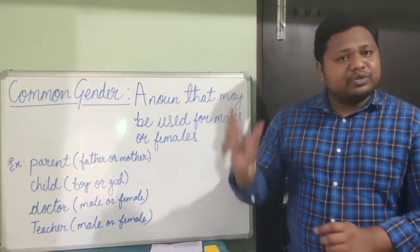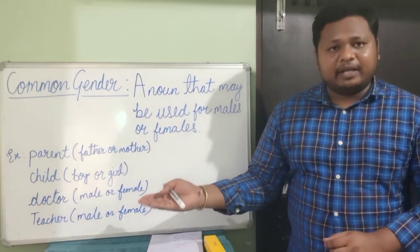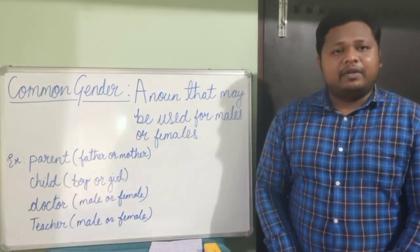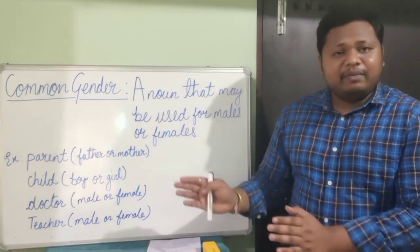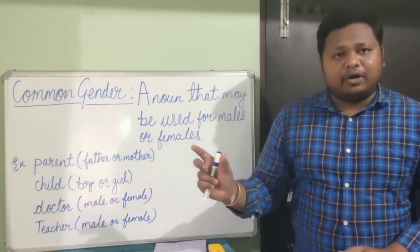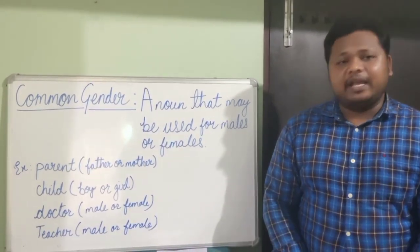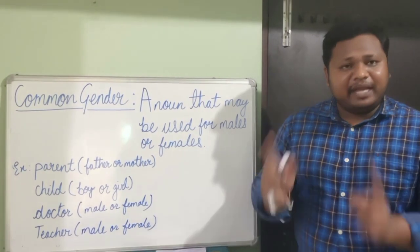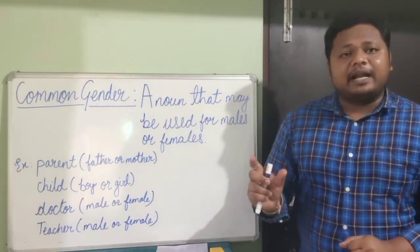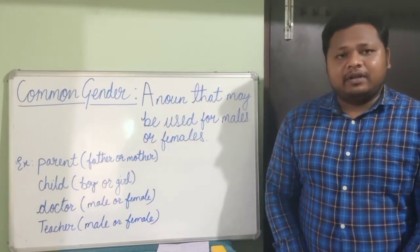We use the word 'child' for both a girl and a boy, so 'child' is a common gender. 'Doctor' — whether male or female — is called by the common name 'doctor', so it is a common gender. Likewise, 'teacher' — whether a male or female teacher — is called by the common name 'teacher', so 'teacher' is a common gender.